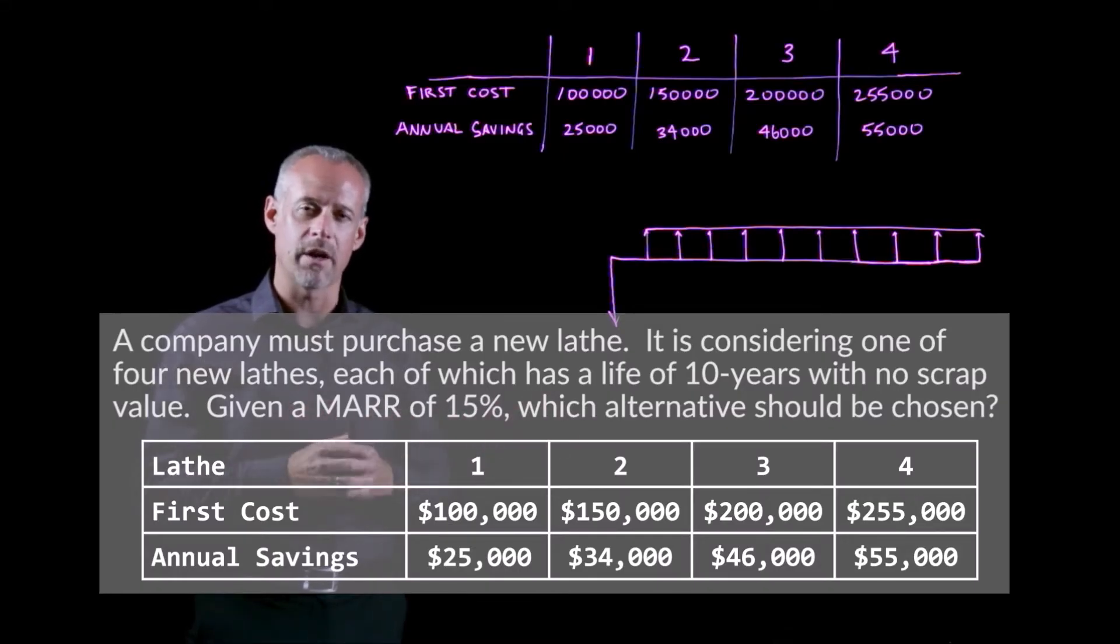Remember in engineering economics, we can only compare dollar amounts that occur at the same point in time. And in this procedure, we will make these comparisons at time t equal to zero.